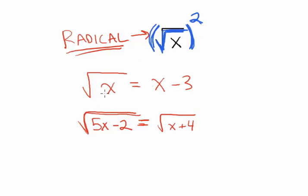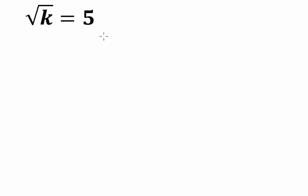We're going to see this in the three examples we do today. Example number one — nice and easy: square root of k is equal to 5. What's the value of k? Before we even solve it, this question is really asking: the square root of what number is equal to 5? The answer is 25 — square root of 25 is equal to 5. That's the first step: take a second to just think about the problem and see if we know the answer offhand.